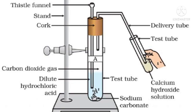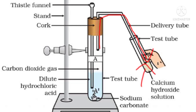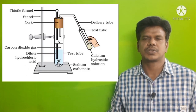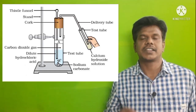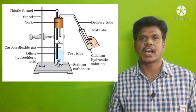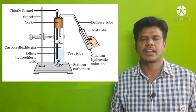Add 2 ml of dilute HCl to that test tube. A few bubbles come out. Allow the gas to pass through the calcium hydroxide solution in the other test tube. The calcium hydroxide turns milky white, indicating that the gas produced is carbon dioxide.